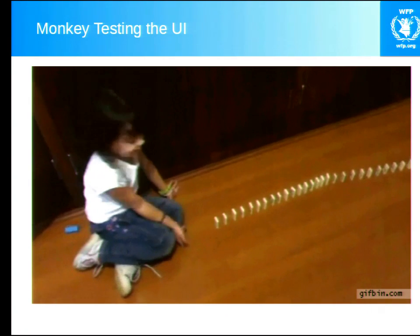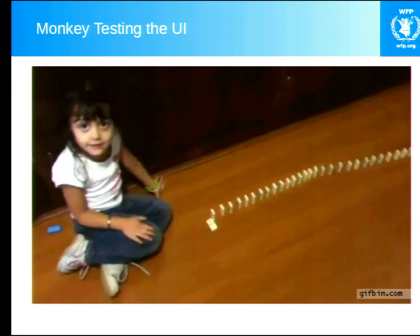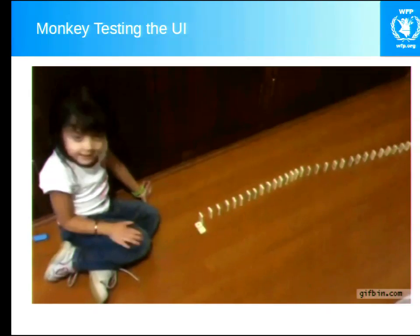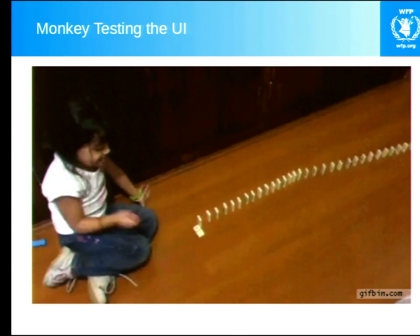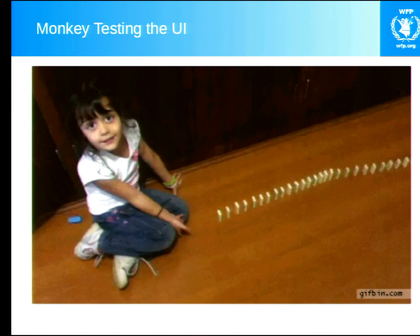But the way you design the form is not often the way the user actually uses it, as is demonstrated in the example here. It's clear what has to happen — hit the domino and all the dominoes fall down. This is often how people who design interfaces feel when users start to use them, and then they iterate until users finally get how to use their interface. Monkey testing is an automated test that runs with no specific test in mind — for example, it can enter random strings into text boxes to ensure it handles all possible user input, generating input you didn't think of.